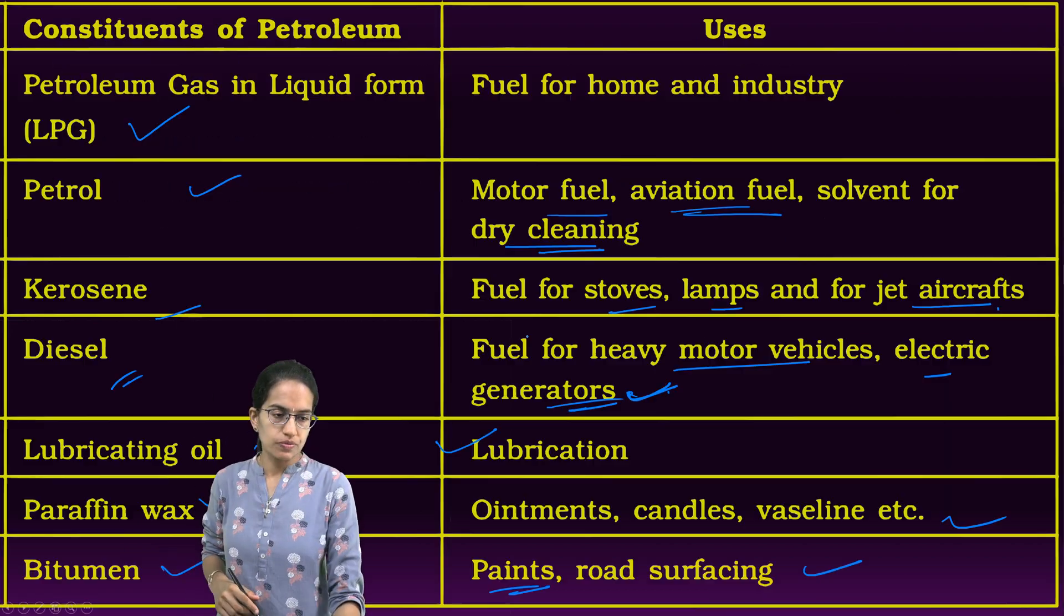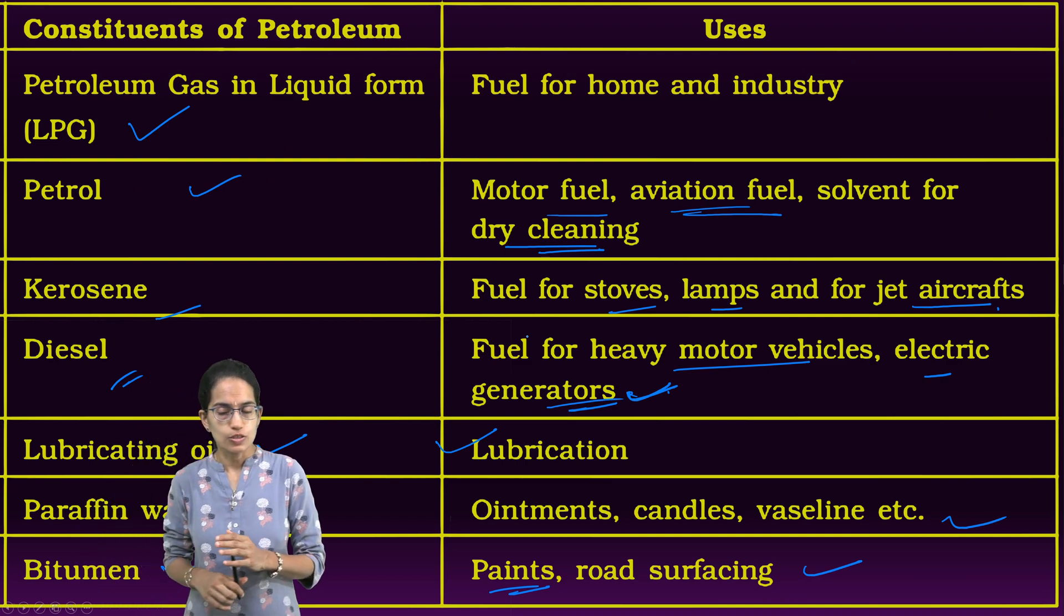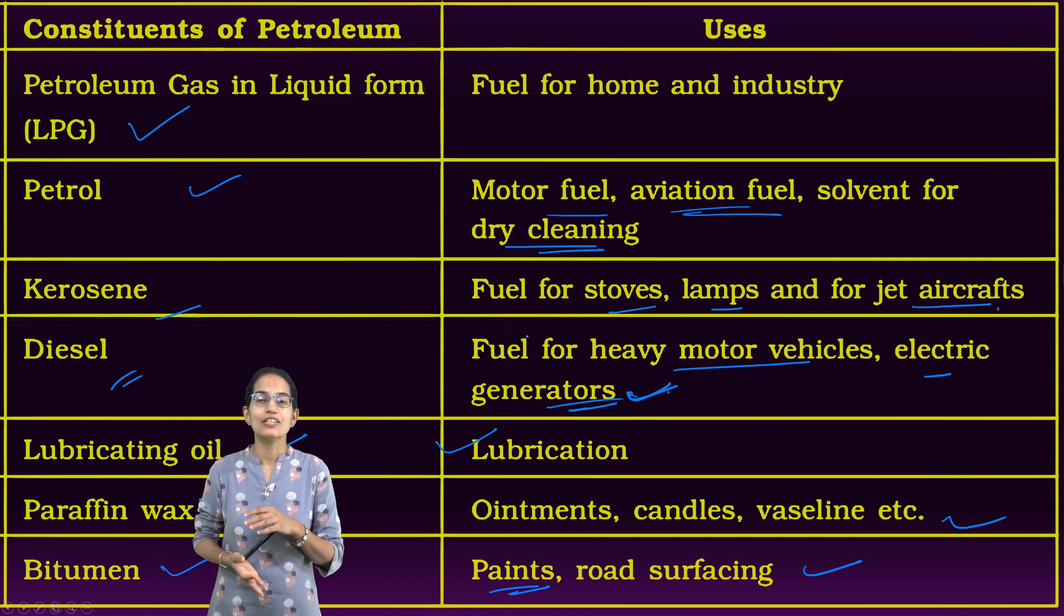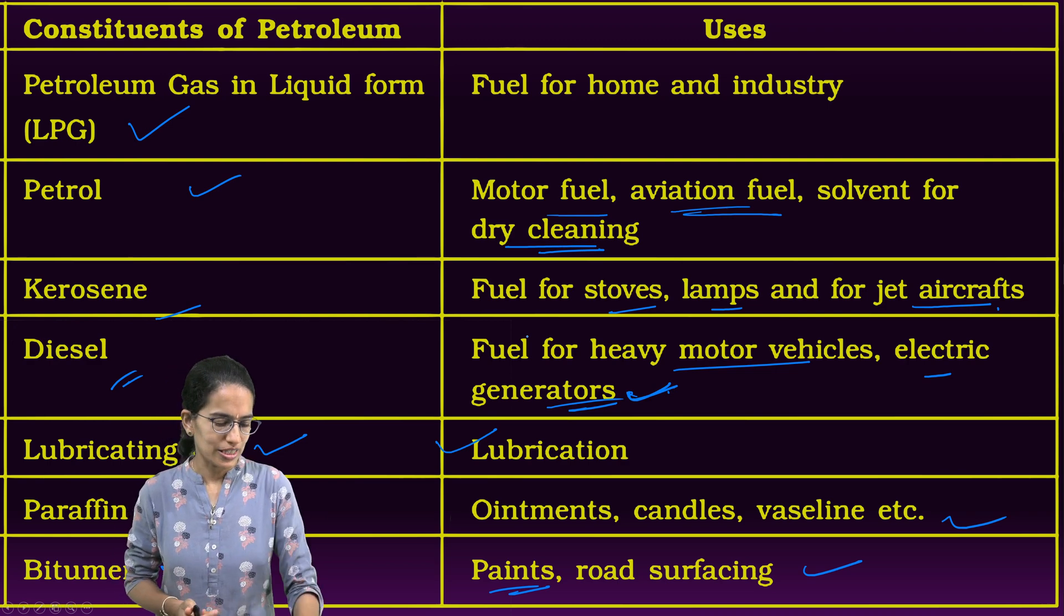Those were some of the important things that we have discussed here. Fractional distillation, as I said, is a very important part of coal and petroleum. At different temperatures, different elements are released. These constituents when released are used for various purposes. I hope you enjoyed the session. We will be covering further NCERT topics in the upcoming sessions. Stay tuned and below is the link for useful study material preparation. Thanks for joining me.